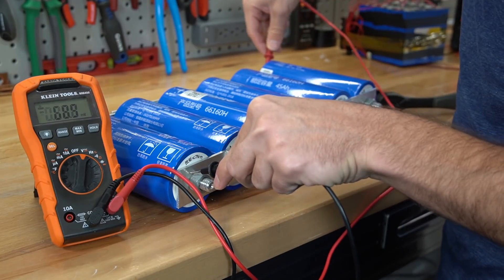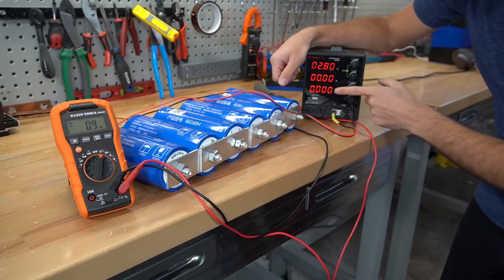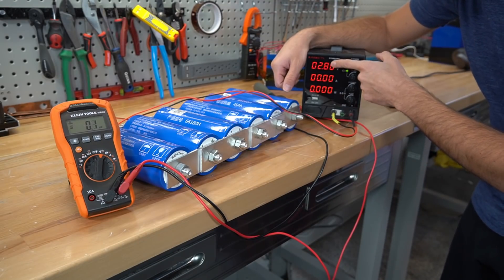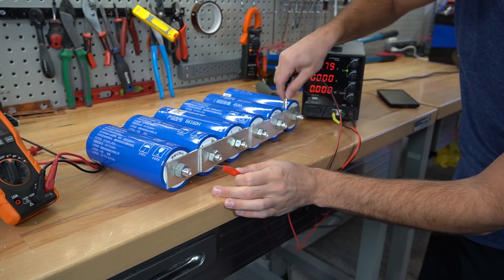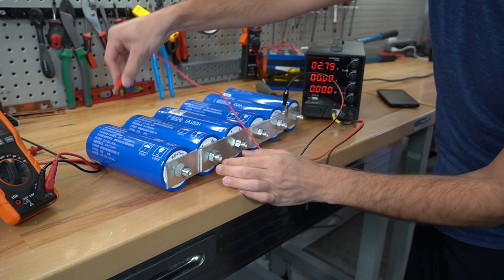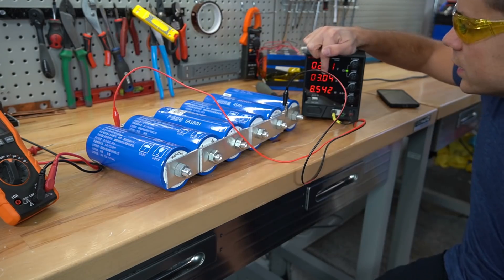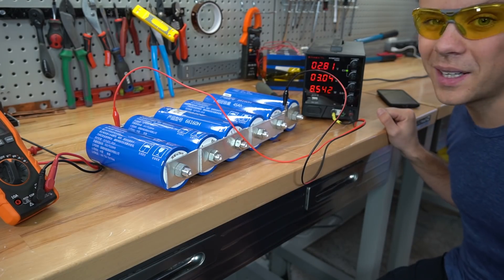We're going to use this power supply set to 2.8 volts to top balance these cells. To ensure that these are charged evenly we're going to put one lead right here and the other lead over here. We're going to wait till the current drops to zero so this might take a while.